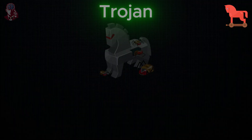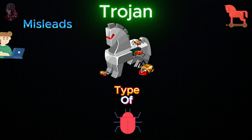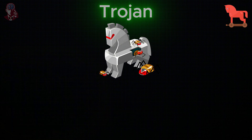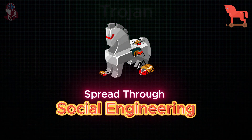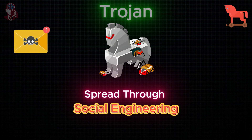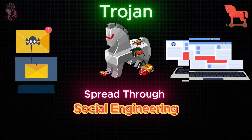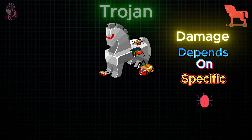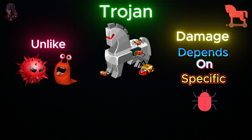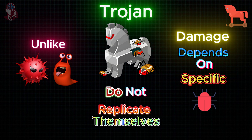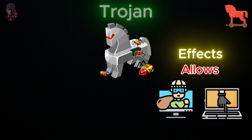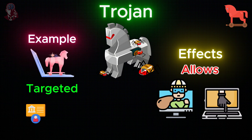Trojan Horse: A trojan is a type of malware that misleads users about its true intent by disguising itself as a harmless program. Trojans are typically spread through social engineering, such as deceptive email attachments or fake advertisements. Unlike viruses and worms, trojans generally do not replicate themselves. They allow data theft and remote control of the system. Example: Zeus Trojan targeted banking credentials globally.